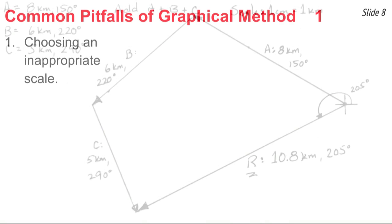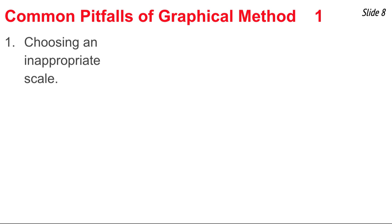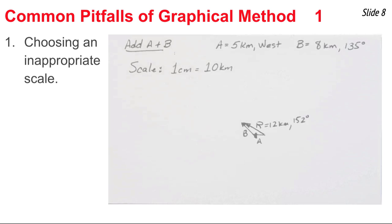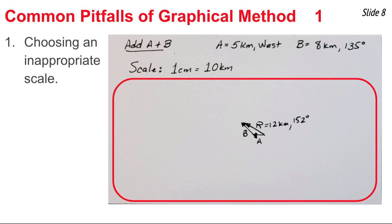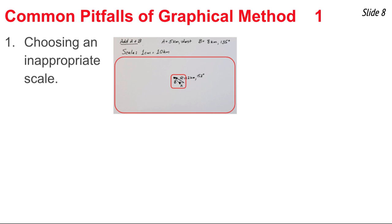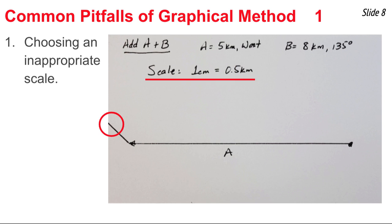Now we'll discuss common pitfalls of the graphical method of vector addition. The first is choosing an inappropriate scale. If the scale is too small, the vector addition diagram barely fills the allotted space. Any time you draw a vector addition diagram, you'll make roughly a one-millimeter error; with a poor scale, that corresponds to a one-kilometer error in magnitude — about a 10% error for vector A, which is unacceptable. Choose a bigger scale, but not so big that your vectors go outside the allotted space.